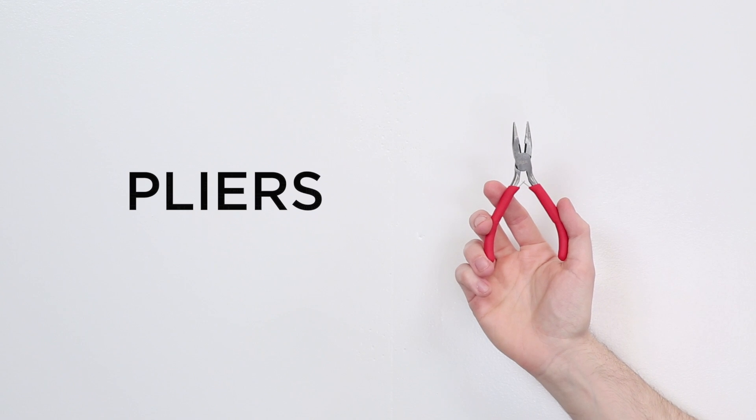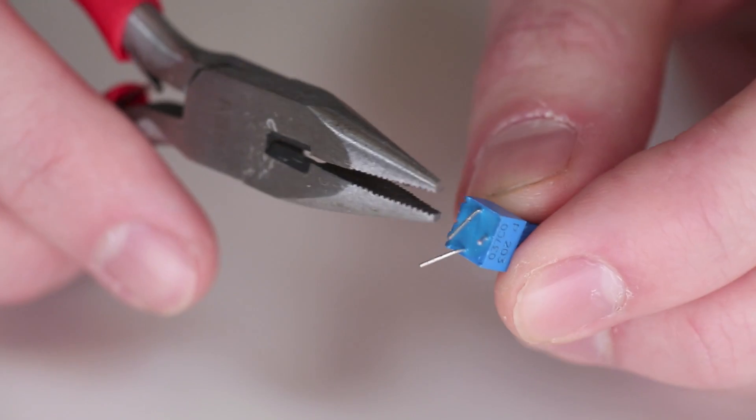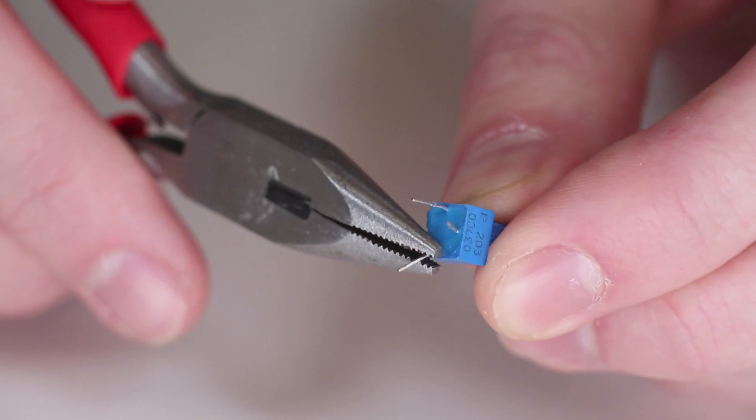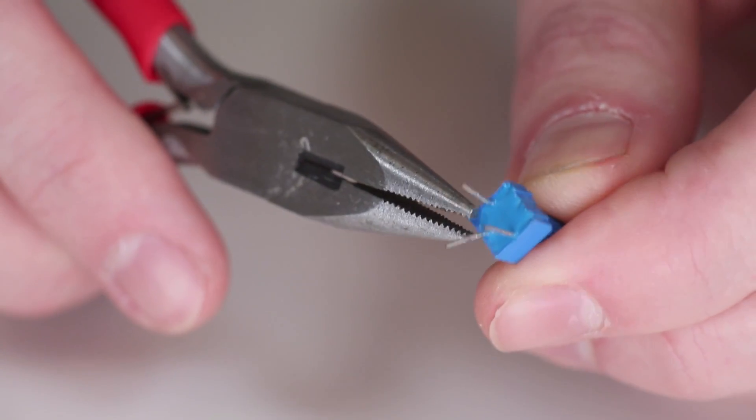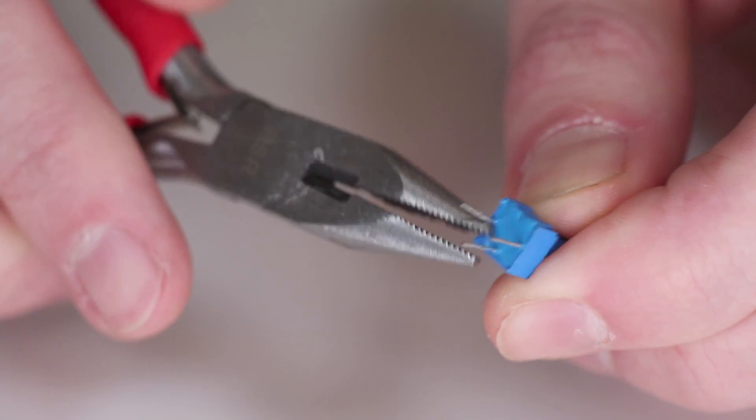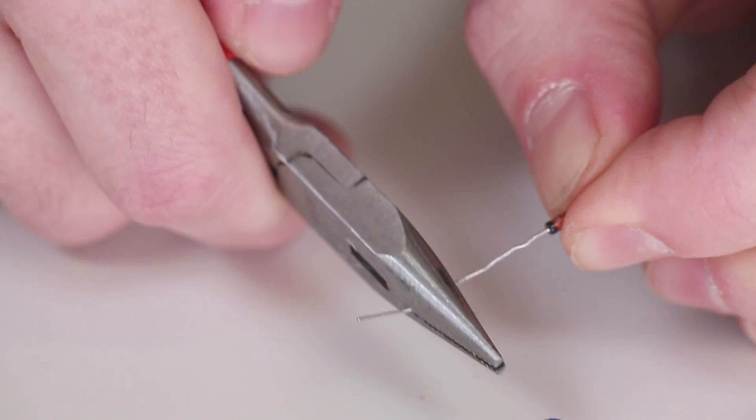Besides cutting tools, you'll also need a good pair of needle nose or flat nose pliers. When building electronics, pliers are essential for gripping, bending, and positioning component leads with a greater degree of accuracy than fingers can provide.